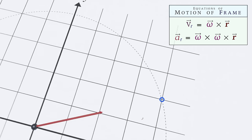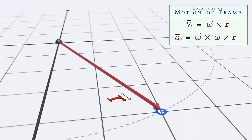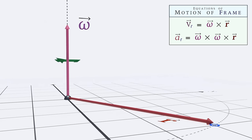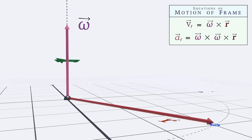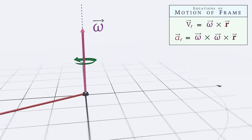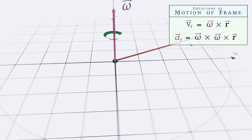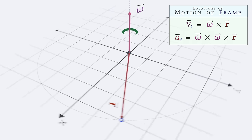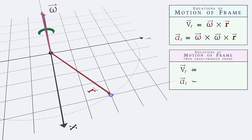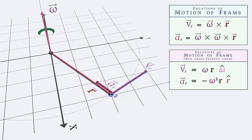Here we interpret r as a vector reaching from the origin to our point of interest, and omega as a vector pointing along the axis of rotation, whose magnitude corresponds to the angular velocity. For simple rotations confined to 2D coordinates, we can alternately express these equations in non-cross product form as omega r times omega hat, and minus omega squared r times r hat, where omega hat indicates the tangential unit direction and r hat indicates the unit radial direction.